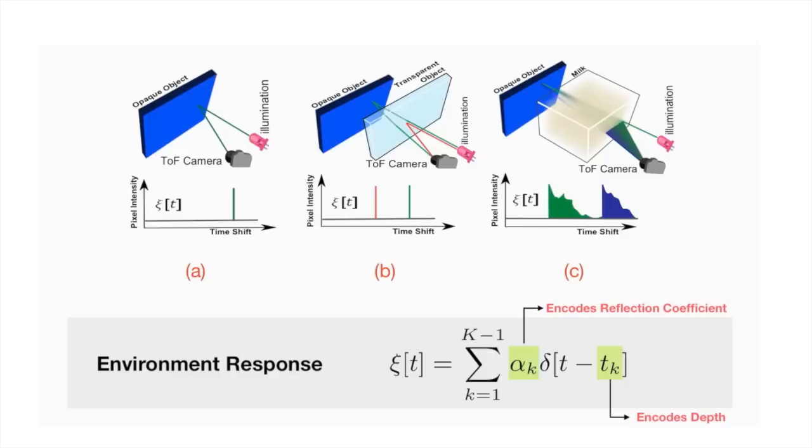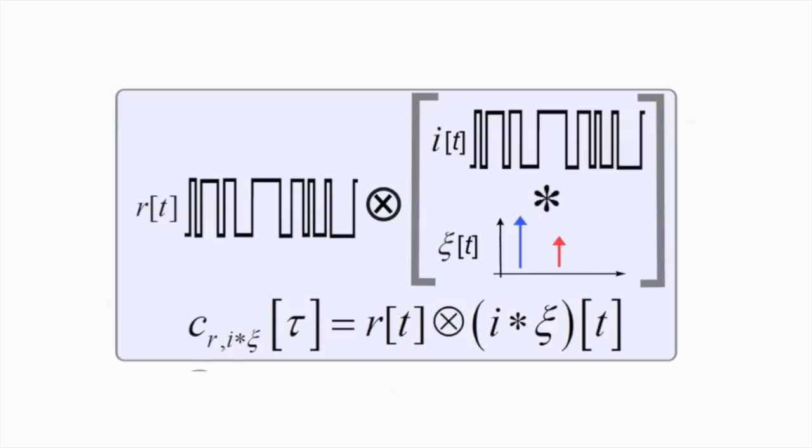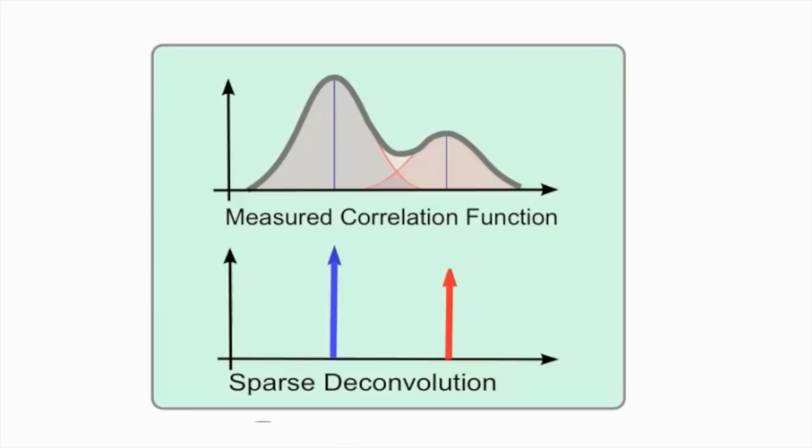This can be modeled as a linear combination of impulses at the locations encoding optical path lengths. In our forward model, we send a binary code to the illumination. When we measure the return code, the shift encodes the path length and distance as before. In the presence of a time profile, the illumination code is convolved with the environment profile to provide the measured response. By deconvolving the measured cross-correlation function, we are able to resolve the sparse profile.